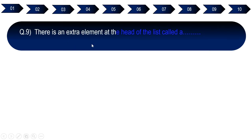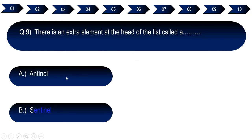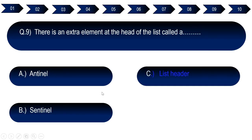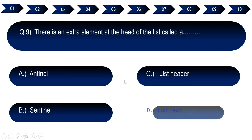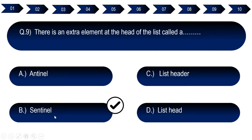Question number nine: There is an extra element at the head of the list called a dash. Option A: antinale. Option B: sentinel. Option C: list headers. Option D: list head. The right answer for question number nine is sentinel, option B.